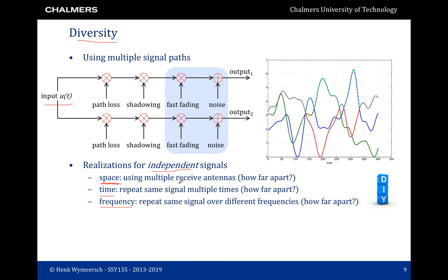The instantaneous SNR for channel i is found from the instantaneous amplitude Ai: the SNR is Ai squared times the signal energy over the noise power spectral density. The average SNR requires taking an expectation over Ai. Since each channel has the same statistics, the average SNR is the same for all channels, obtained by the signal energy times the expected value of the amplitude squared over the noise power spectral density.